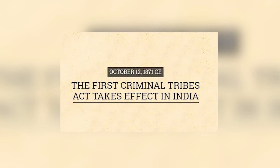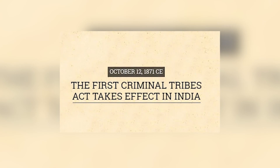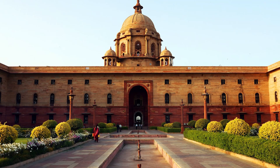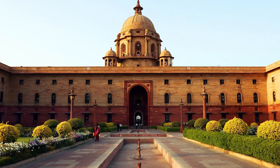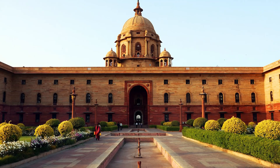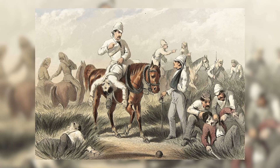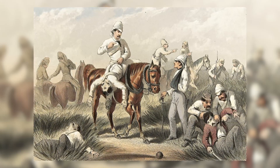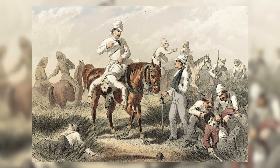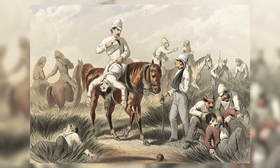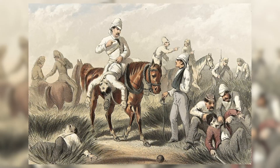Under British rule, the Criminal Tribes Act (CTA) came into force on October 12, 1871 in India. Under the act, certain Indian communities considered prone to systematic commission of non-bailable offenses such as thefts were systematically registered by the government. Since they were described as habitually criminal, restrictions on their movement were imposed and adult male members were forced to report weekly to the local police station. With the objective of establishing greater control over rebel rural regions and nomadic groups resisting British Indian authorities, the Criminal Tribes Act labelled around 200 tribal groups as born criminals.